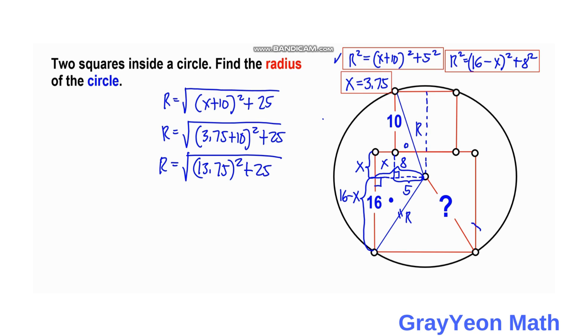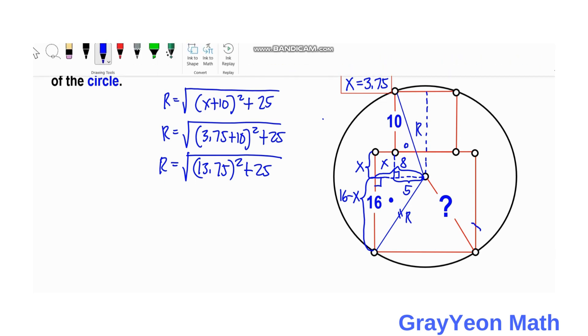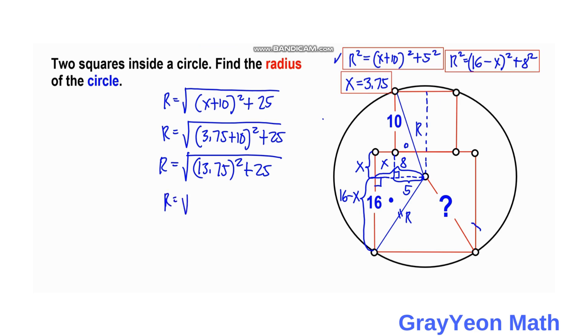This gives us r equals the square root of 189.0625 plus 25. R equals the square root of 214.0625. If we get the square root of this, r equals 14.63 units for the radius of the circle.